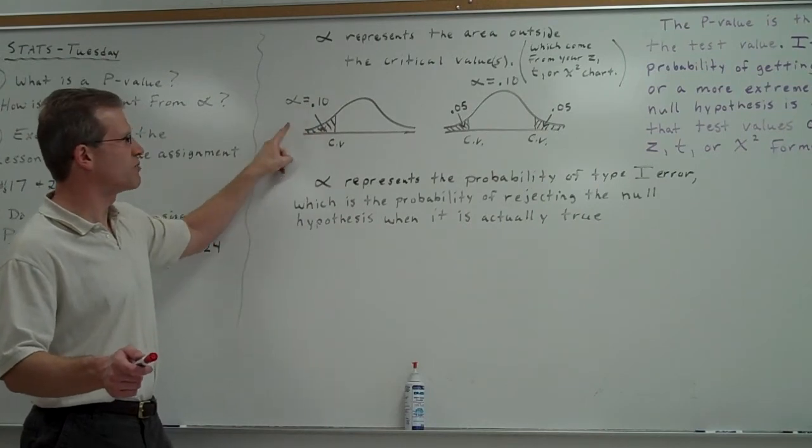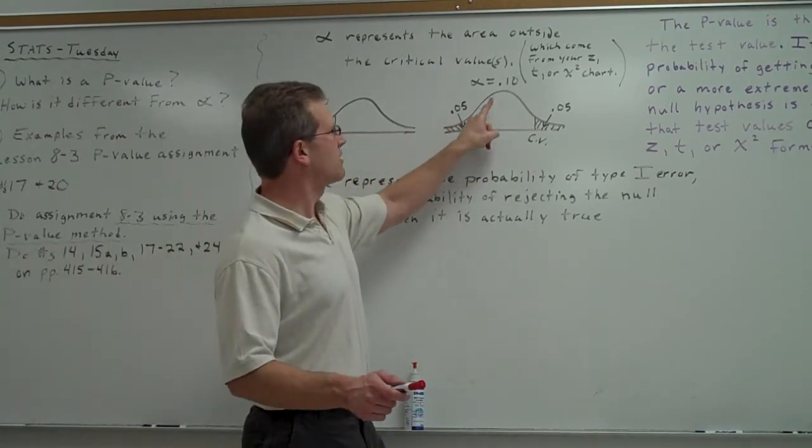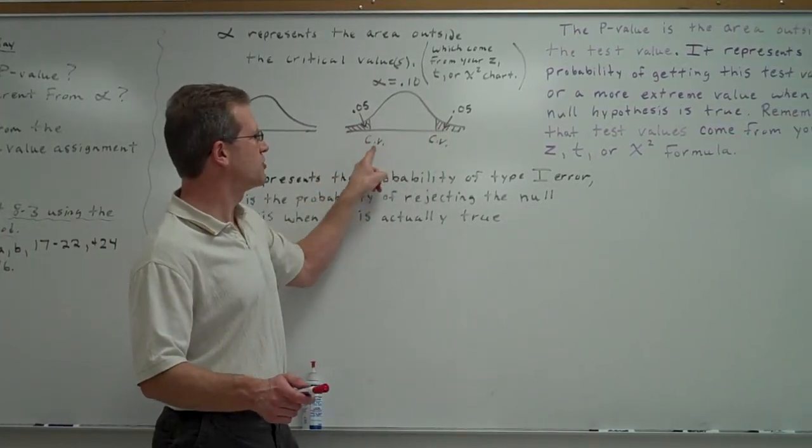So if alpha is 0.10, that whole area would be 0.10. If it's two-tailed, then half of 0.10, 0.05 would be in each tail, and there'd be two critical values.